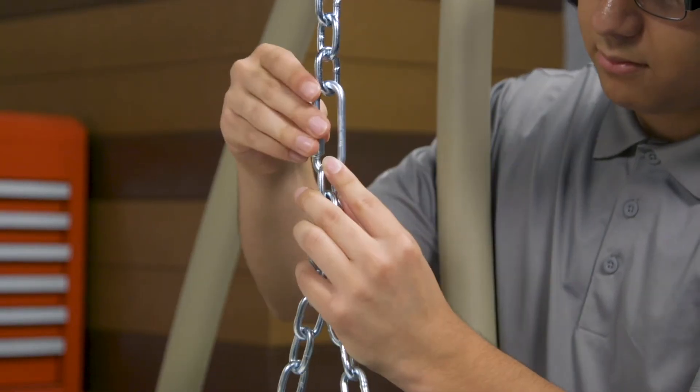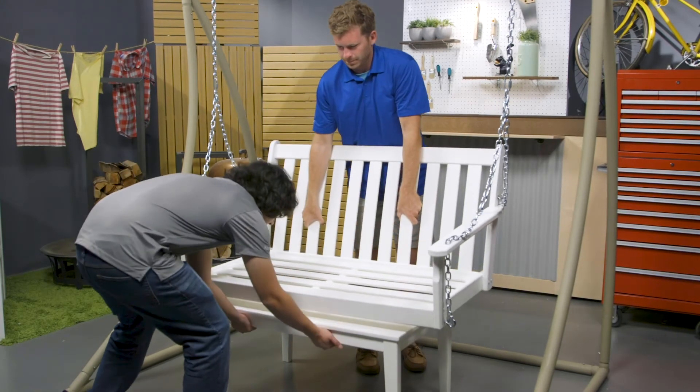You can also adjust the angle of the swing by selecting a different link on the chain attached to the swing.